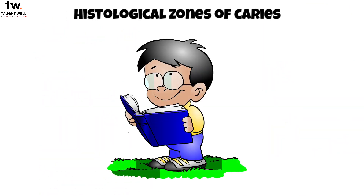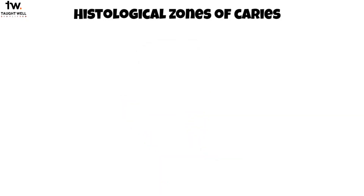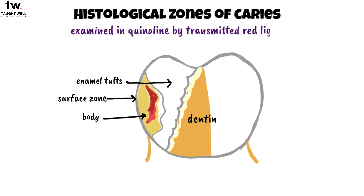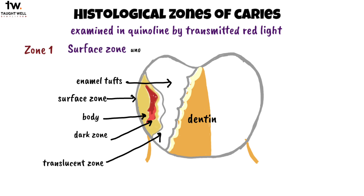Let's look at the histological zones of caries. The established enamel caries lesion has four histologic zones when examined in quinoline by transmitted red light. Zone 1 is the surface zone, which is relatively unaffected by the caries attack. The intact surface over incipient caries serves as a barrier to further bacterial invasion, with hypermineralization and increased fluoride content responsible for the relative immunity of the enamel surface.